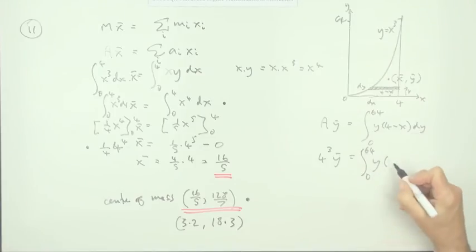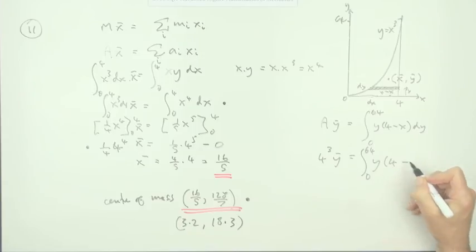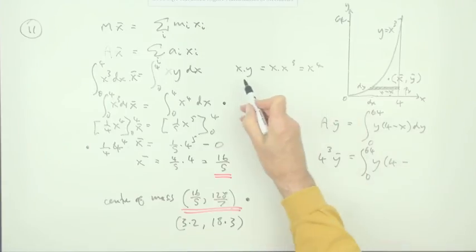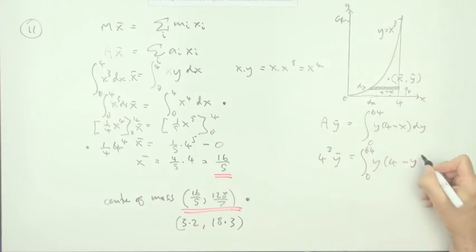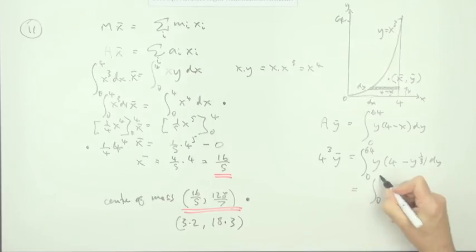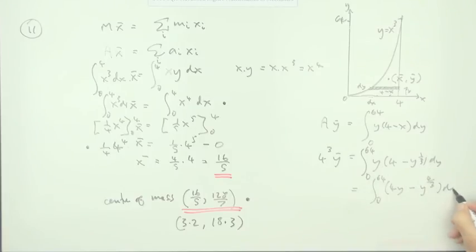So 4 to the 3, ȳ is going to be, from 0 to 64 of, now it's all in terms of y, so that x is no use, so that'll have to be 4 minus, and of course, x would be y to the power of 1/3, dy. Well, I might need to multiply that out, you can't use a product there. 4y minus y to the power 4 upon 3, when you put one back onto it, dy.